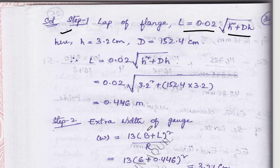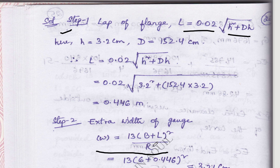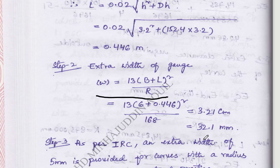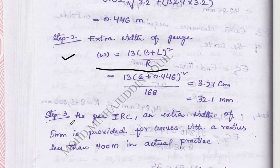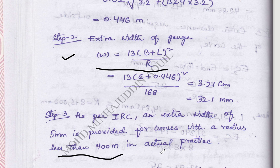Step 2: calculating the extra width of the cage using the formula W equal to 13 into capital V plus L one squared divided by R. We substitute all values and step 2 is completed. As per IRC, an extra width of 5 mm is provided for curves with a radius less than 400 meters in actual practice.